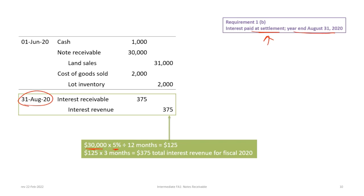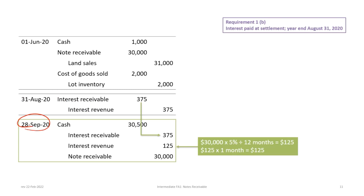The principal is $30,000 times 5% divided by 12 months — that's still $125 a month. For June plus July plus August, that's three months, which is why there's an interest accrual here: interest receivable and interest revenue for $375. Then on the settlement date of September 28th, the cash includes the value of the note receivable ($30,000) plus any interest. The note receivable receives a credit to wipe it out, the interest receivable from the August accrual is wiped out, and an additional one-month calculation of $125 is recorded. The total cash received is $30,000 principal plus $375 accrued at end of August plus $125 for September.